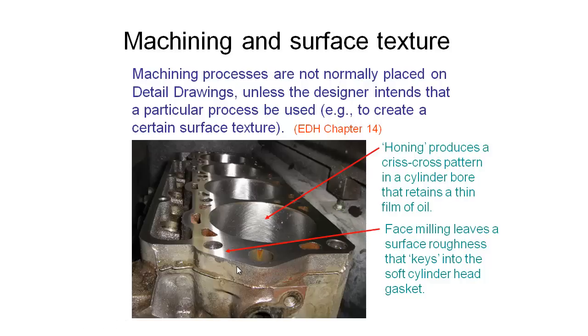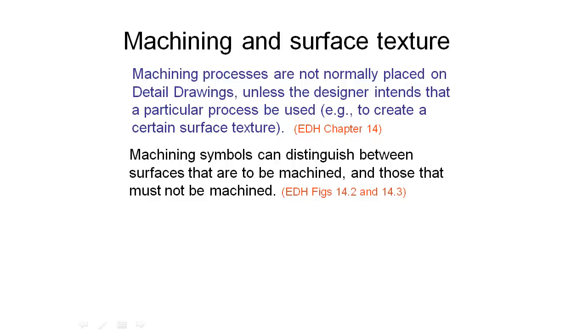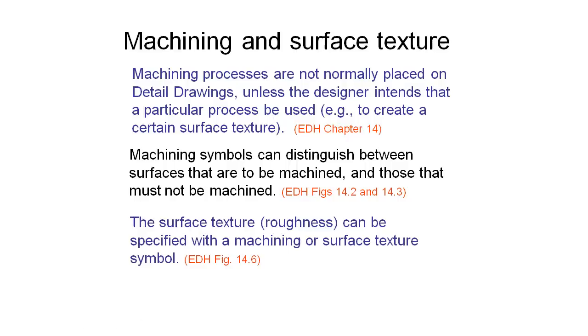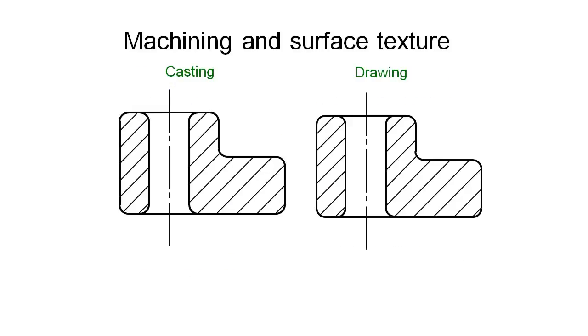These are a couple of examples of where we would ask for very particular surface finishes, but generally we just specify the tolerance and the surface finish—and there are forms for doing that—and then the people manufacturing the part can figure out the best tool for the job. We have some particular machining symbols that we can use to distinguish between the surfaces that are to be machined and those that must not be machined. Sometimes we want to clearly say machine these ones but don't machine these ones because they don't need to be machined. We also have some shorthand ways of indicating the required surface texture or roughness that we might want. We're not really going into it in this subject, but if you want to have a look at those, they're covered in the Engineering Drawing Handbook in Figure 14.6.